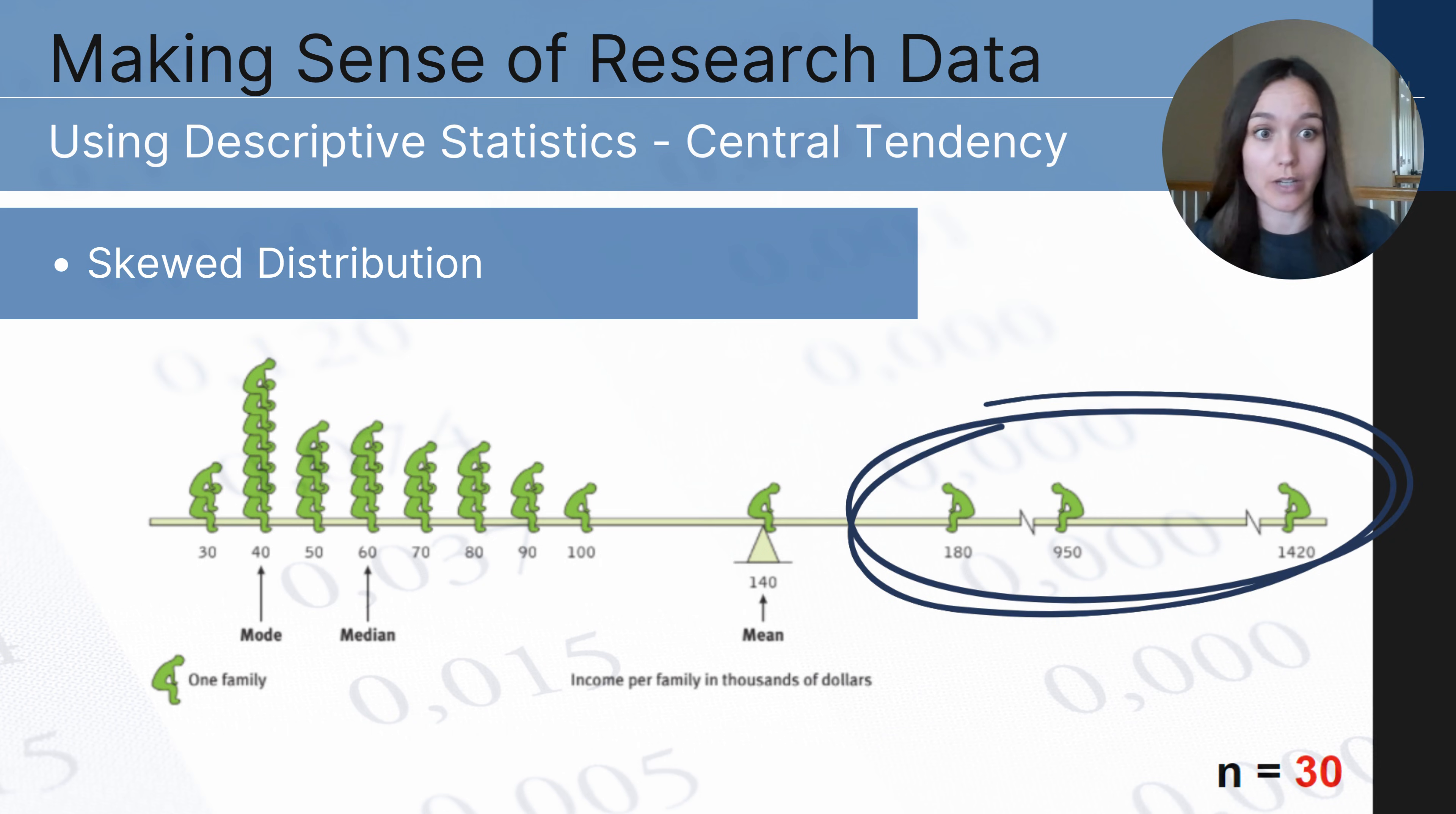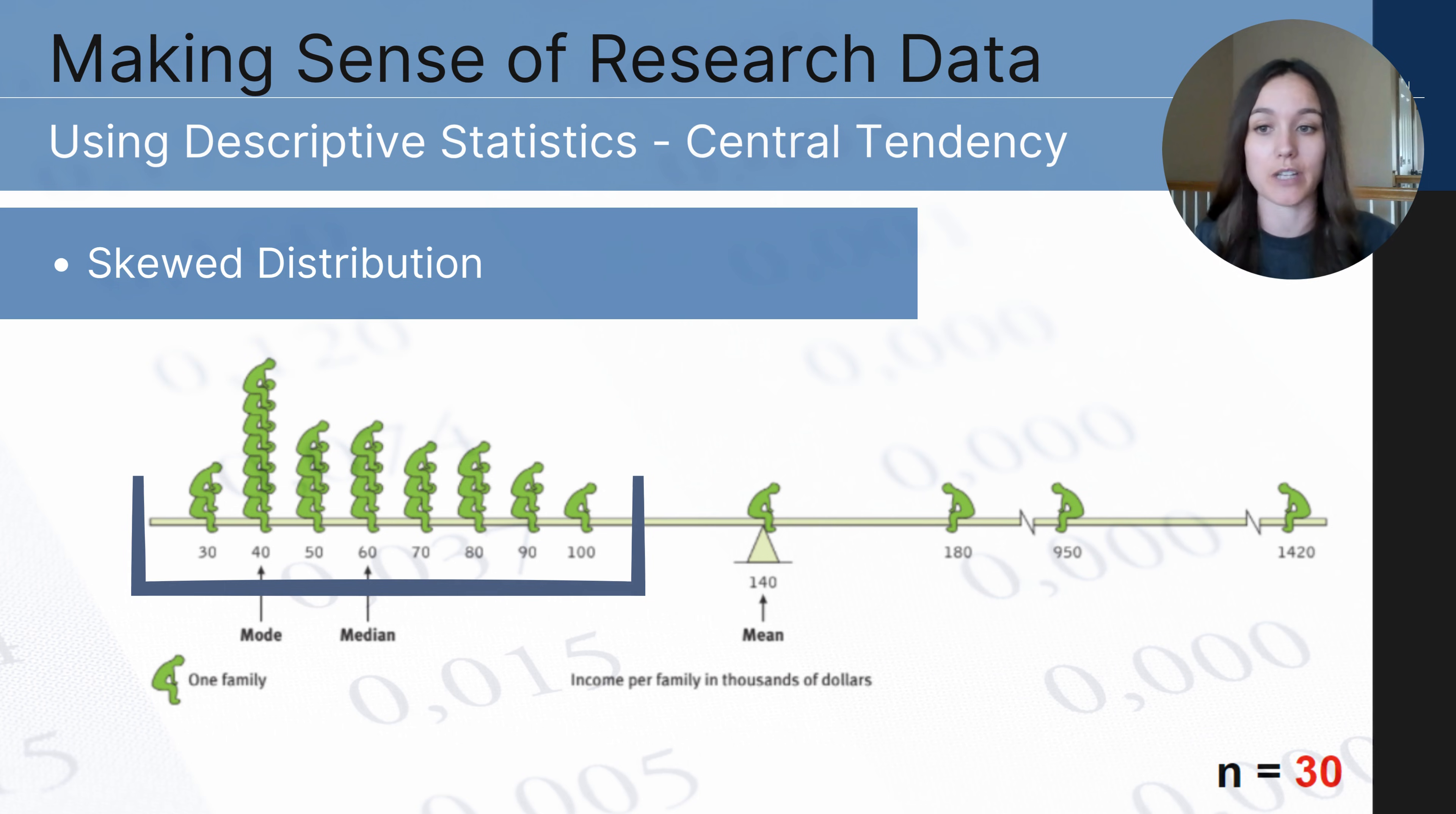And you might notice that there are these outliers that are much farther away than the majority of families in this city and so this is a really great example of a situation where you'd want to consider all of the measures of central tendency because if you looked at just one, if you just looked at the mean, you wouldn't get a full picture of what's really going on in this particular city.